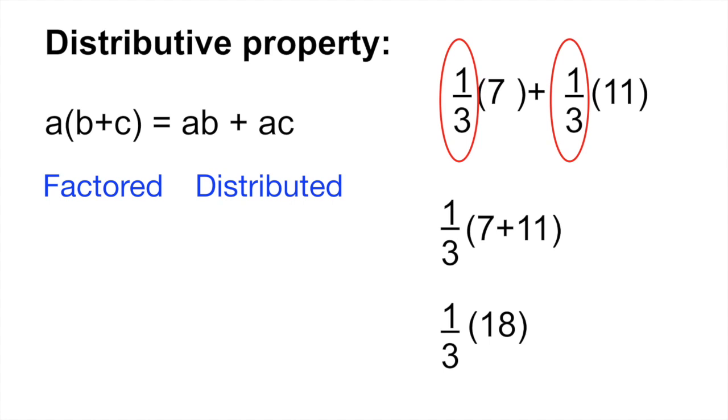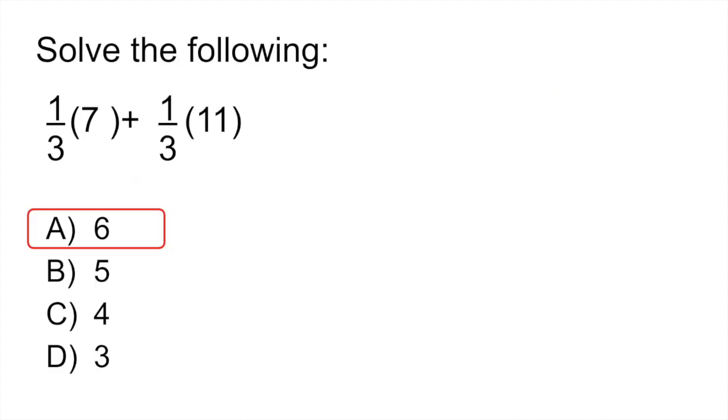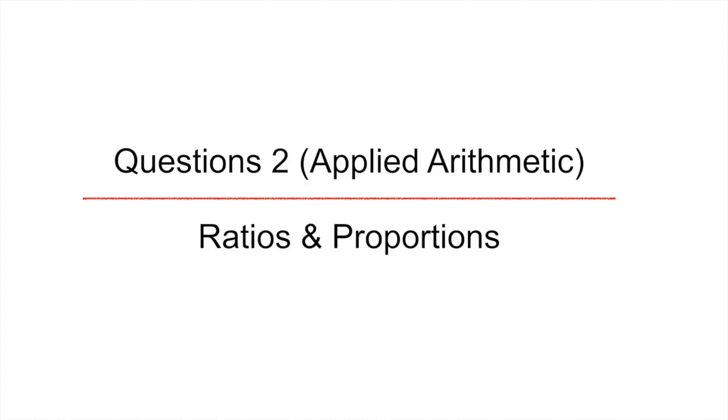And you can see how easy it is to solve it now. What is 18 divided by 3 or multiplied by 1 third? 6. So remember these two little equations of how you could have either equations in a factored form or a distributed form because this is going to save you a ton of time. So our correct answer would be A.